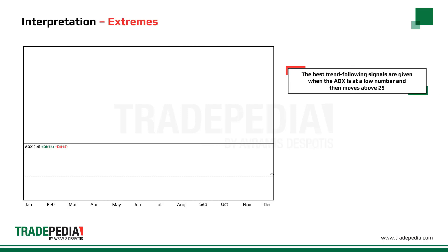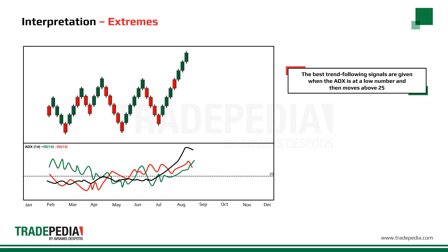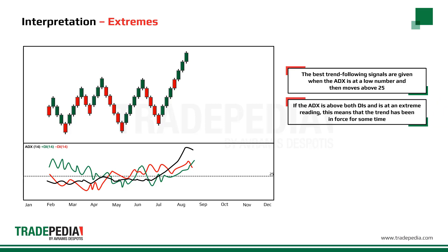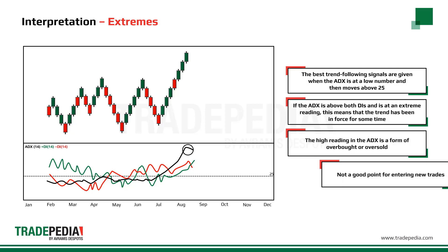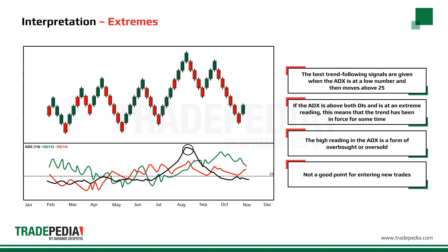The best trend-following signals are given when the ADX is at a low number and then moves above 25. If the ADX is above both DI's and isn't at an extreme reading, this means that the trend has been in force for some time. A high reading in the ADX is a form of overbought or oversold, where new trades in the direction of the prevailing trend are usually not profitable. In other words, this is not a good point for entering new trades because the DI's could recross in the direction of the prevailing trend.